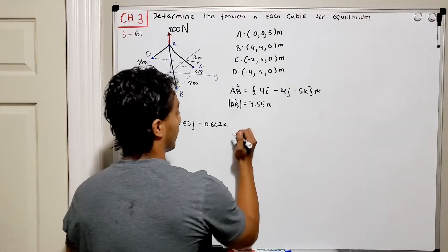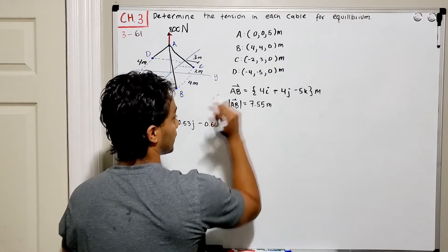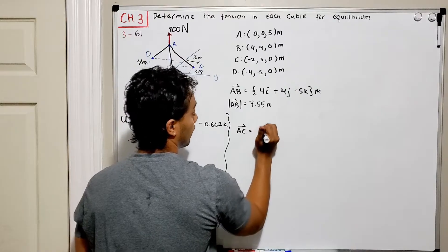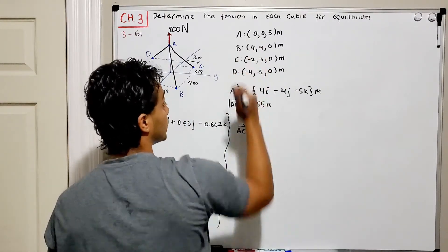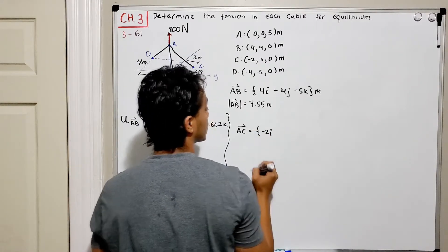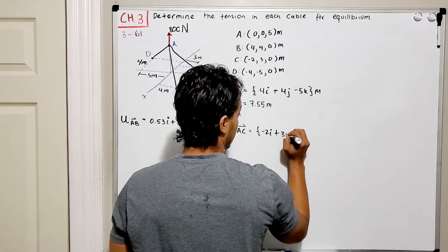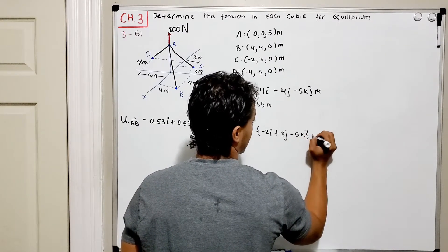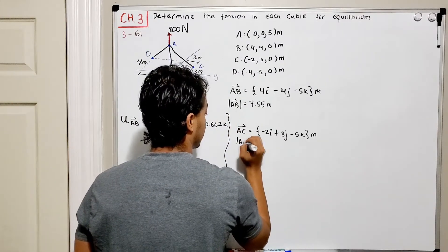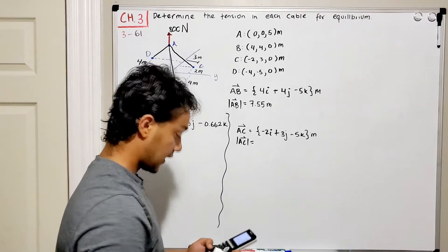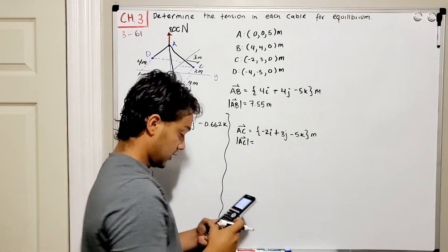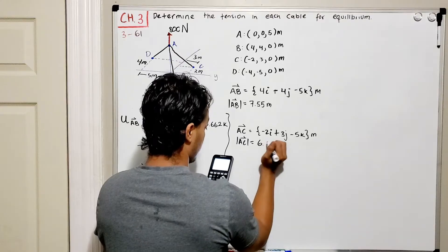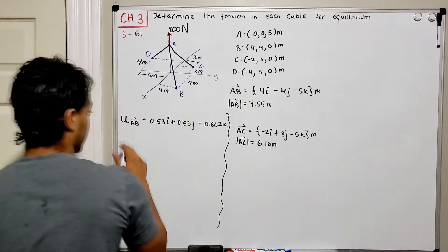Now for cable AC. Vector AC equals C minus A: negative two minus zero gives negative two in the I direction, three minus zero gives positive three in the J direction, and zero minus five gives negative five in the K direction. The magnitude is the square root of two squared plus three squared plus five squared, equal to 6.16 meters.